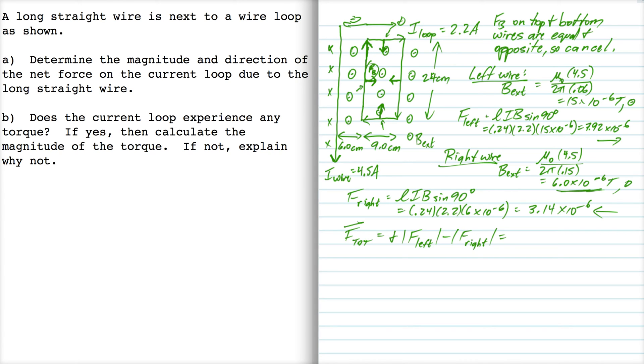So that would be plus 7.92 minus 3.17, which is 4.8 times 10 to the minus 6 newtons directed to the right, in the plus x direction.